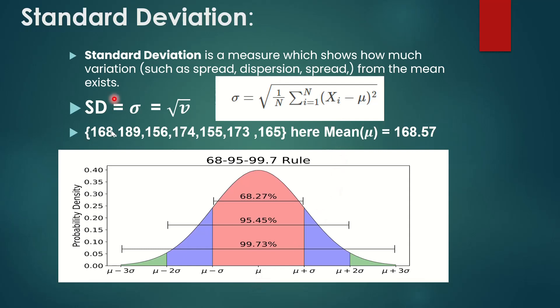Standard deviation is measured from the mean. For example, if SD equals 10 and mu equals 168.5, then mu plus one SD is 178.5 and mu plus two SDs is 188.5. On the left-hand side, mu minus one SD is 158.5. So 68% of data falls between 158.5 and 178.5.